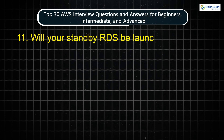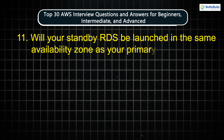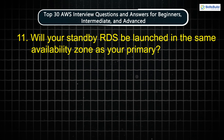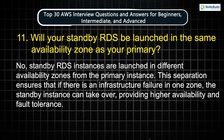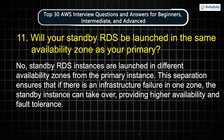Question 11: Will your standby RDS be launched in the same availability zone as your primary? No. Standby RDS instances are launched in different availability zones from the primary instance. This separation ensures that if there is an infrastructure failure in one zone, the standby instance can take over, providing higher availability and fault tolerance.